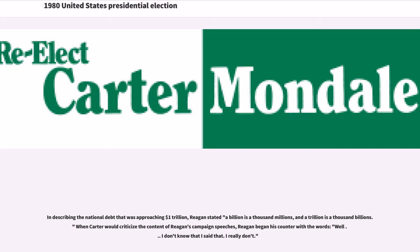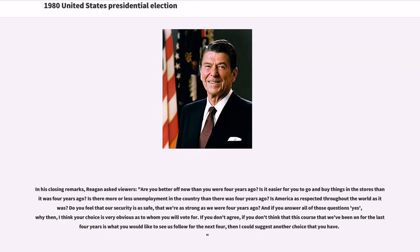When President Carter criticized Reagan's record, including voting against Medicare and Social Security benefits, Governor Reagan audibly sighed and replied, "There you go again." In describing the national debt approaching $1 trillion, Reagan stated, "A billion is a thousand millions, and a trillion is a thousand billions." When Carter would criticize the content of Reagan's campaign speeches, Reagan began his counter with the words, "Well, I don't know that I said that. I really don't." In his closing remarks, Reagan asked viewers, "Are you better off now than you were four years ago?"